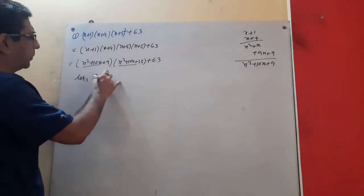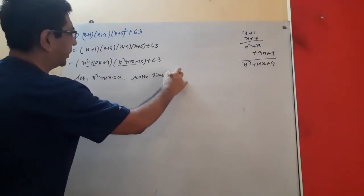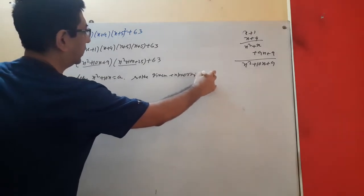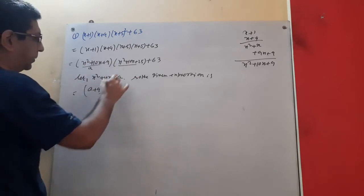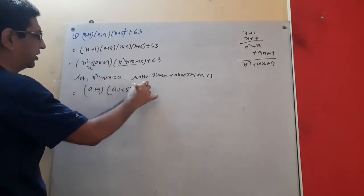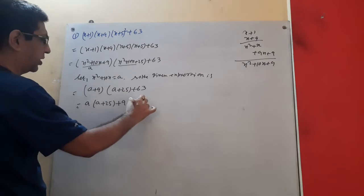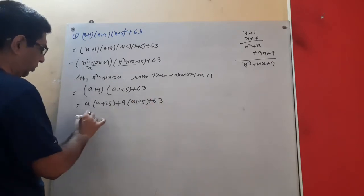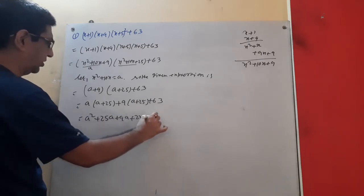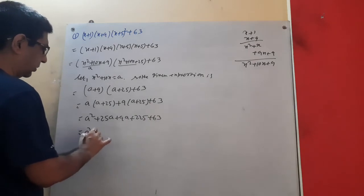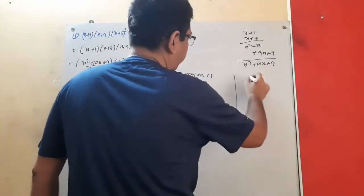Let x² + 10x equal to a. The given expression then becomes (a + 9)(a + 25) + 63. Expanding: a² + 25a + 9a + 225 + 63, which gives a² + 34a + 288.